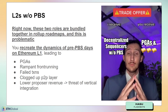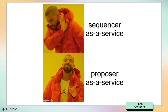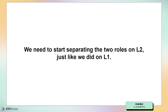So all of these problems that we talked about two years ago on Ethereum — boom, they are back now on layer two, making their comeback. When we talk about decentralizing sequencers today, I think it would be more accurate to actually talk about proposer as a service, because that's what it really is — we are only looking at the proposer today. We need to start separating these two roles on layer two, just like we did on layer one.